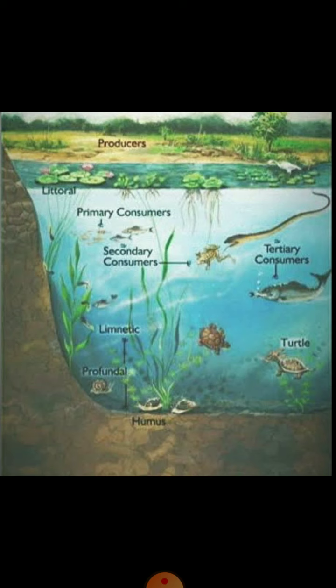Ducks feed on the algae while bigger fish feed on the smaller fish. Birds like storks and herons feed on the bigger fish. Butterflies are attracted to the flowers of aquatic plants around the pond. Mammals like deer feed on plants in the shallow portions of the pond. Amphibians and reptiles like turtles and snakes depend on pond plants for food and shelter.